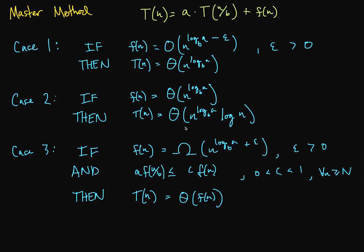Welcome to our 20th video on data structures and algorithms. Today we're talking about the master method, which allows us to find the asymptotic growth of a recurrence relation of the form T(n) = a·T(n/b) + f(n).